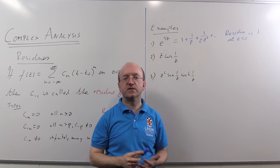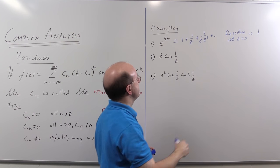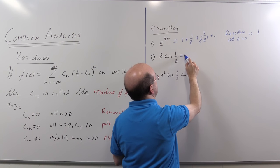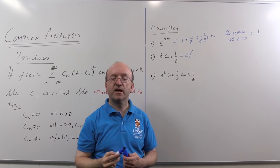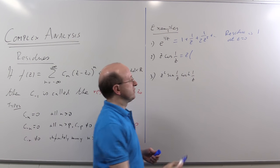Second example: z cos(1/z). Not that much harder. We write down the series for cos(1/z). We just take the series for cos and change the z to 1/z.